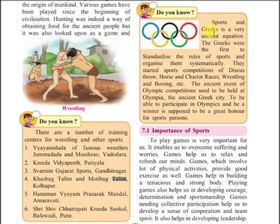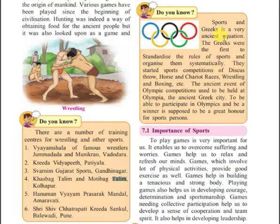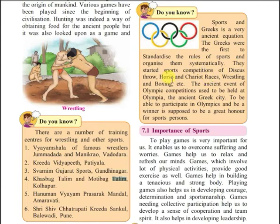Sports and Greece share an ancient equation. The Greeks were the first to standardize the rules of sports and organize them systematically. They started sports competitions of discus throw, horse and chariot races, wrestling, and boxing. The Greek people put all these games in a standardized position through the Olympic Games and opened these games to the world.